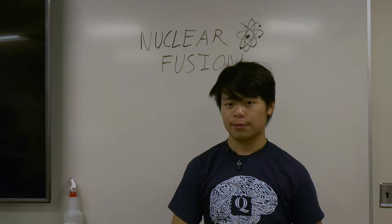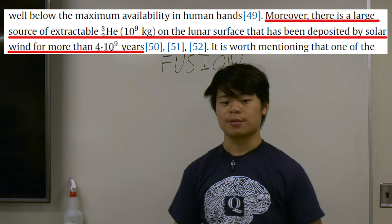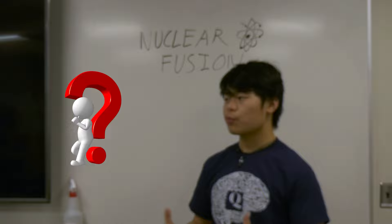Additionally, other candidates for fusion fuel, such as helium, can be found on the moon. Solar ejections have deposited up to millions of pounds of usable helium on the lunar surface. So that brings up an important question. Why aren't we using this energy in our rockets?